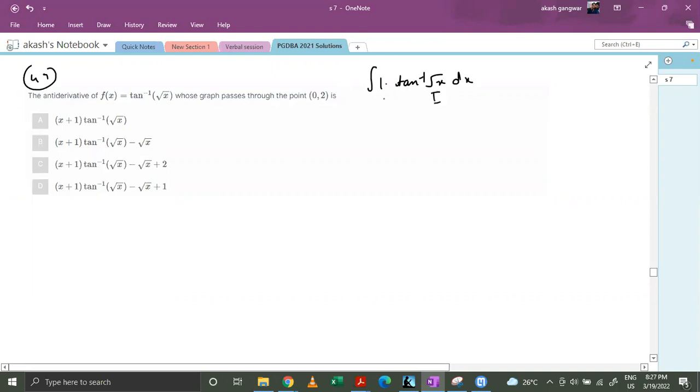So this is our first function, this is our second function. We'll get first function into integral of second minus integral of derivative of first, which is 1 upon 1 plus x, into 1 upon 2 root x times integral of second function dx.